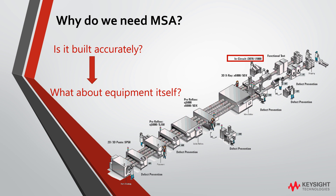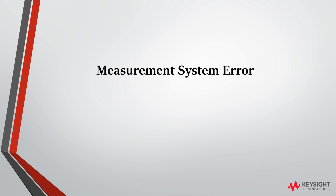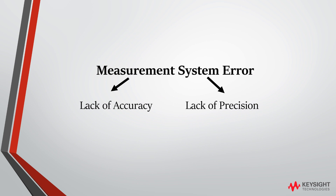Why does measurement system error occur? A measurement system error arises due to lack of accuracy and lack of precision of the measurement system. Accuracy refers to how close the measurement system is to reading the correct value, and it is determined by bias and variance.